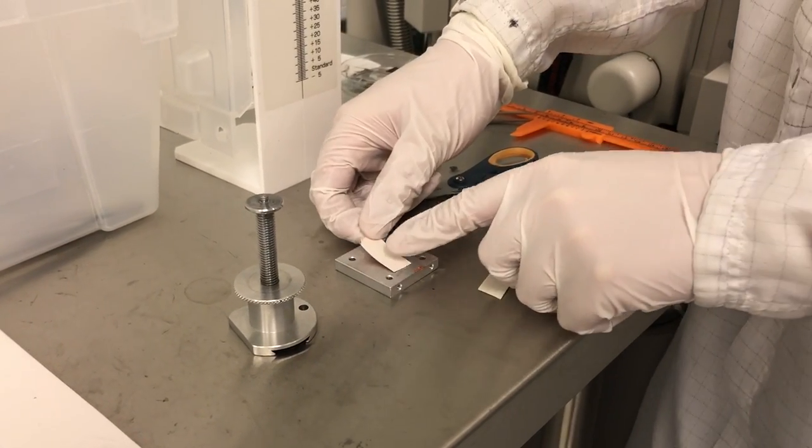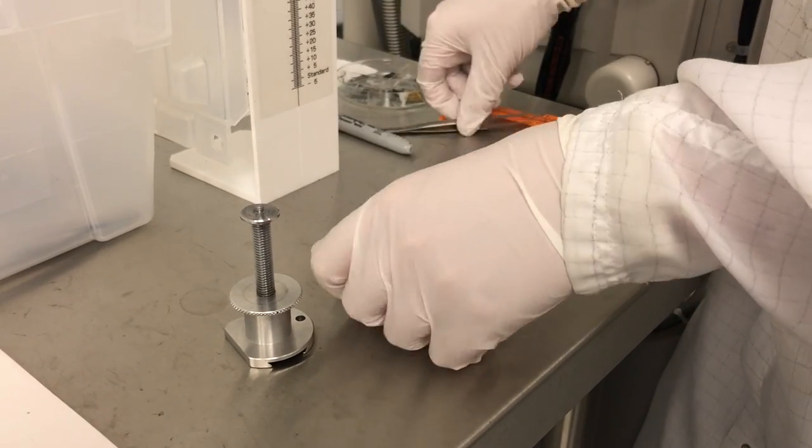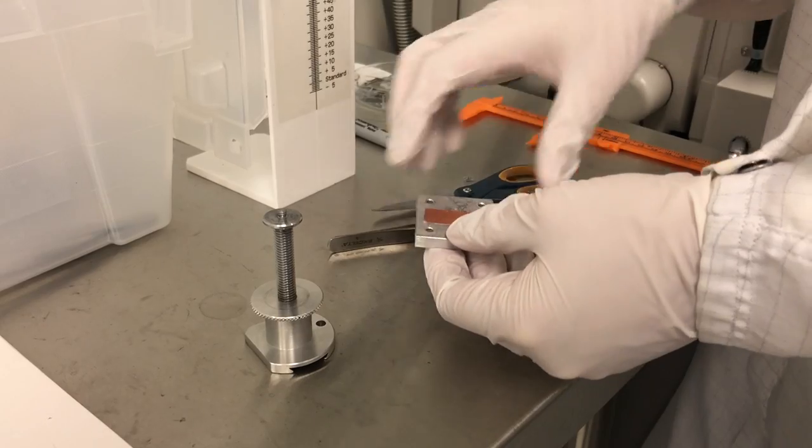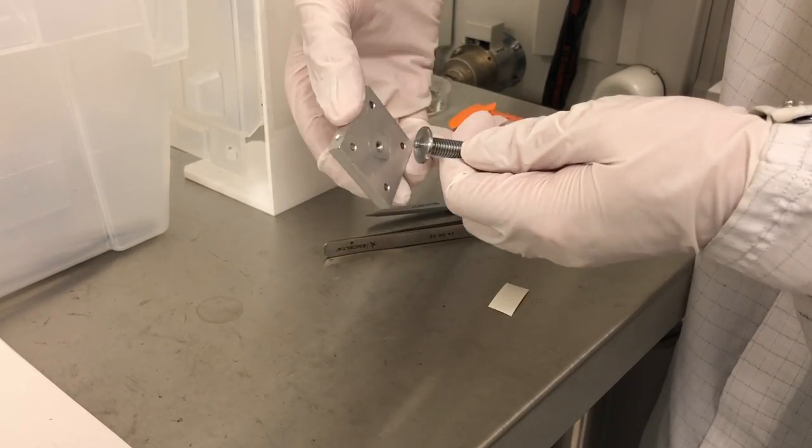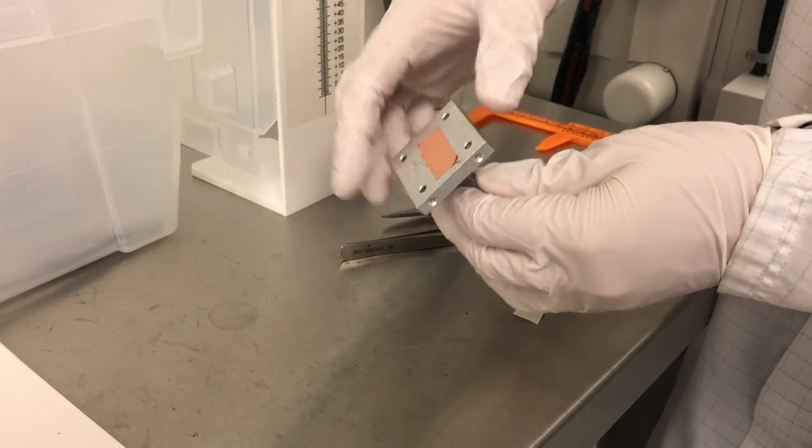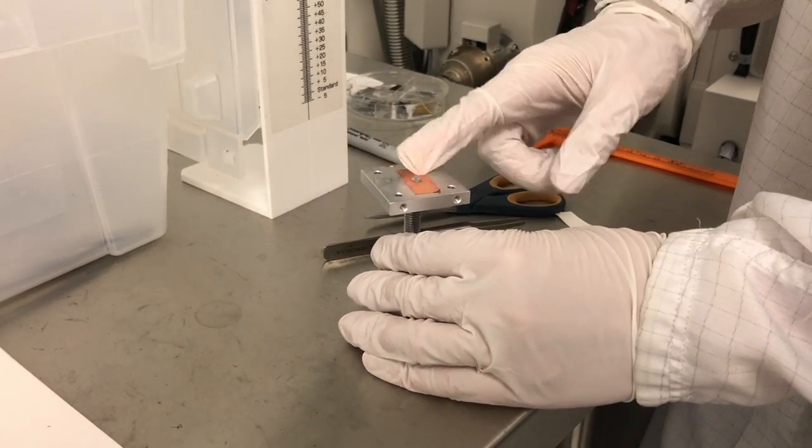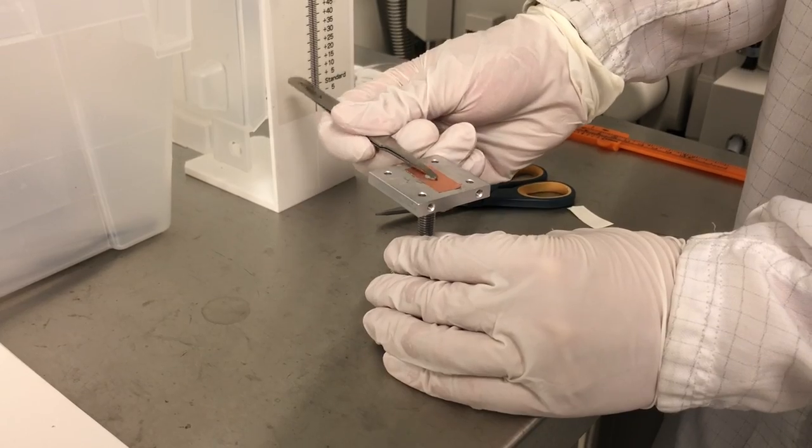If your sample is non-conductive, you will need to sputter gold or carbon onto the surface of the sample unless you are using the VPSCM vacuum setting. The sample may be attached using either the copper tape provided on the table opposite the SEM or with carbon dot tape. Ensure that plenty of adhesive is used. There should be no air or gaps between the sample and the stage.